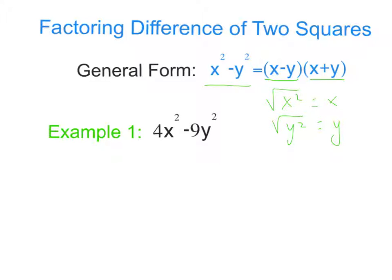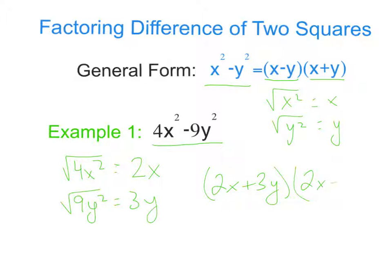So in our example one, we have 4x squared minus 9y squared. So the square root of 4x squared is going to be 2x, and the square root of 9y squared, well, the square root of 9 is 3, square root of y squared is y, so we have 3y. So if we are trying to factor 4x squared minus 9y squared, it will be 2x plus 3y and 2x minus 3y. And that is our answer because we can't simplify further.